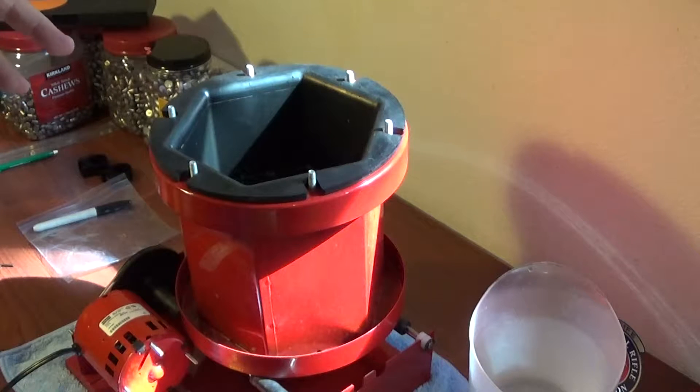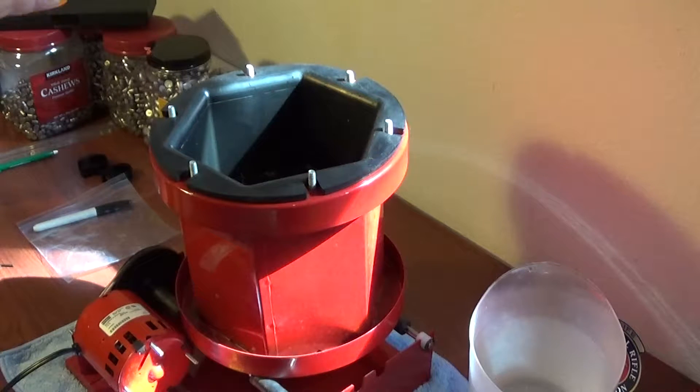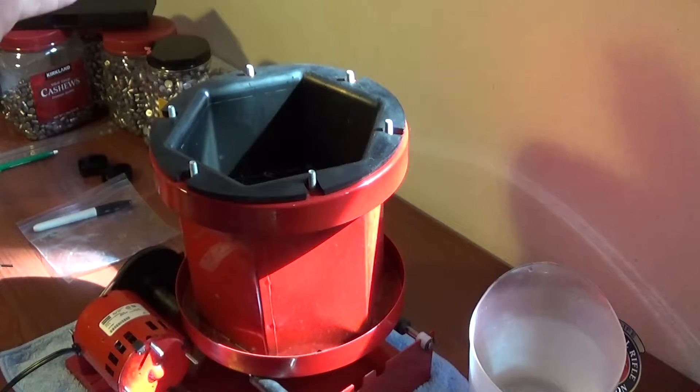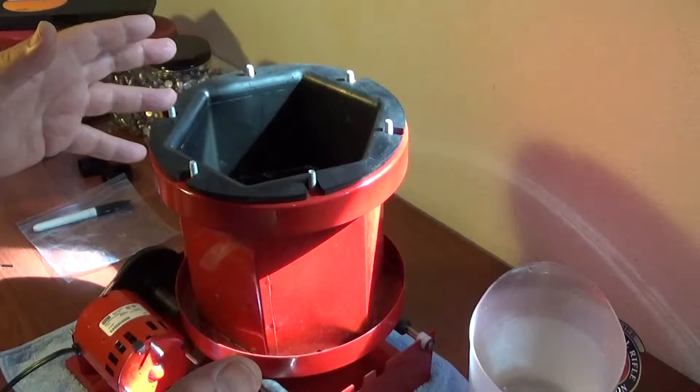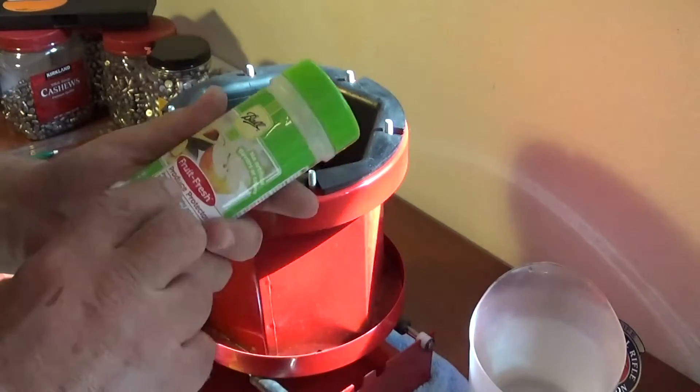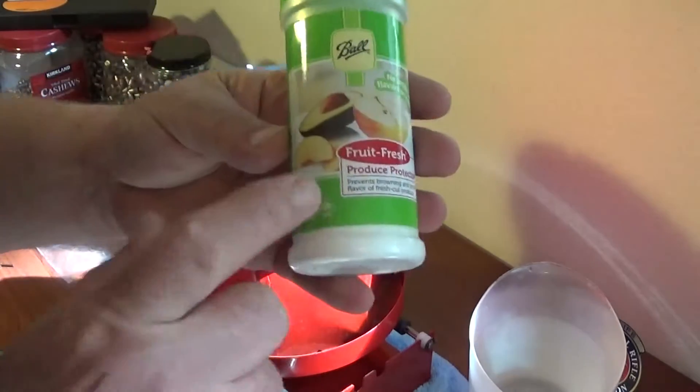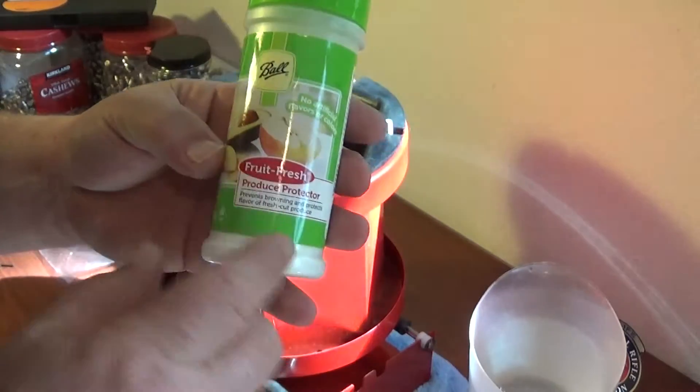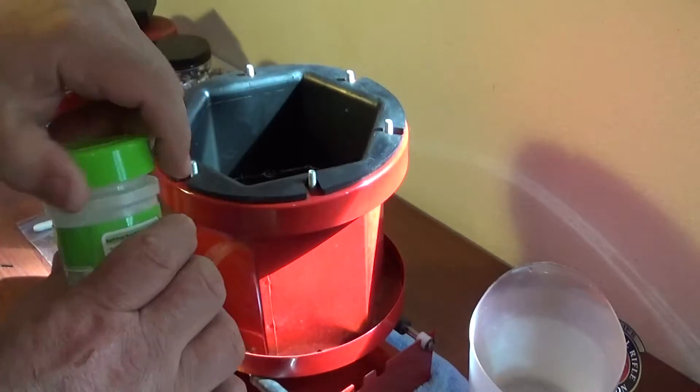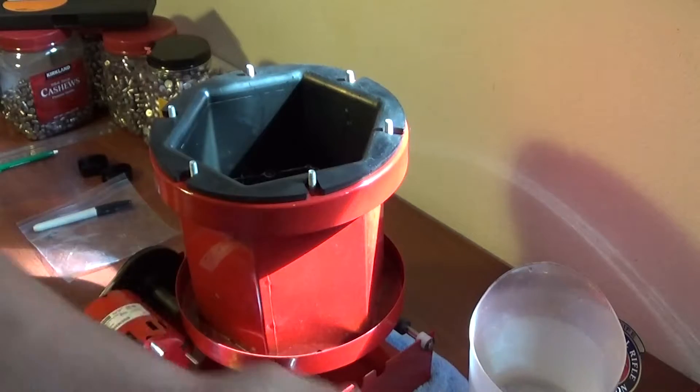Now there are some stores out there that don't carry it but if they have a canning section you can get the same thing. I'm talking about Lemon Shine. A lot of guys put Lemon Shine in their solution and Lemon Shine does work real good and I have some but for demonstration purposes we're going to go ahead and use Fruit Fresh instead.